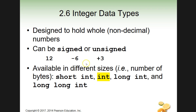Integer data types are designed to hold whole numbers — non-decimal — and can be signed or unsigned. So like 12, minus 6, plus 3, doesn't really matter. And there are different sizes, meaning the number of bytes, the amount of storage it will take. What we're going to be using for right now will be just basic ints. Once you get this down, we can play around with the amount of storage it takes.